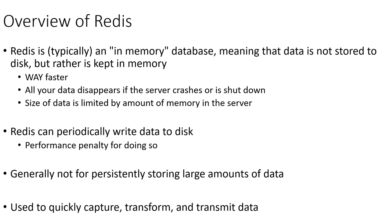Redis is typically configured as an in-memory database, meaning it's much faster, but all of your data goes away if the server crashes or is shut down. The size of your data is also limited by the amount of memory in the server. While we can periodically flush memory to disk, we'll experience performance penalties for doing so.